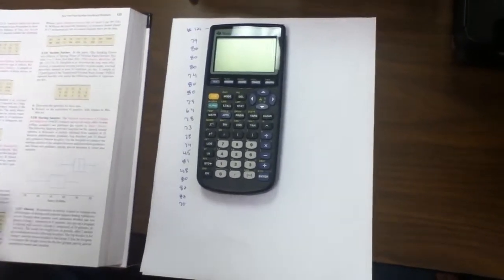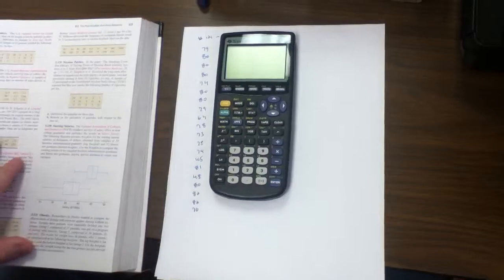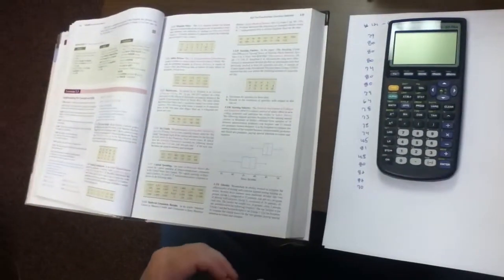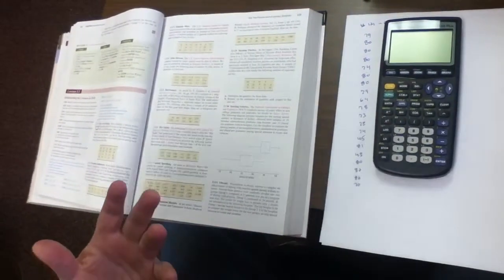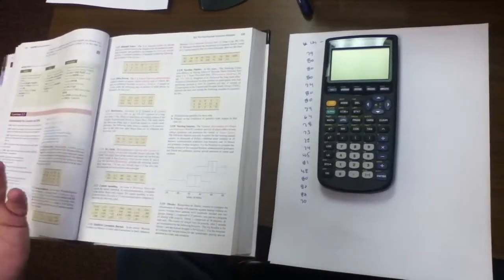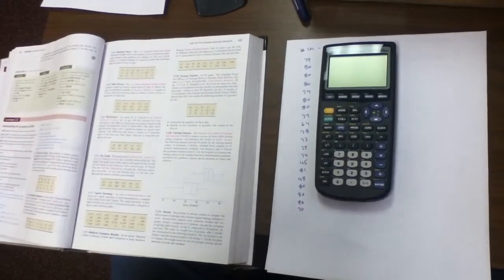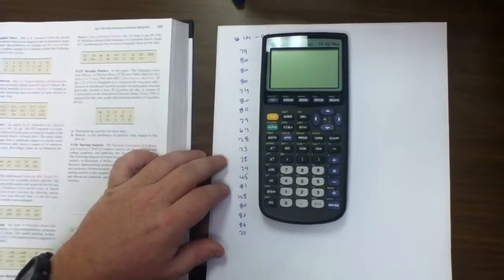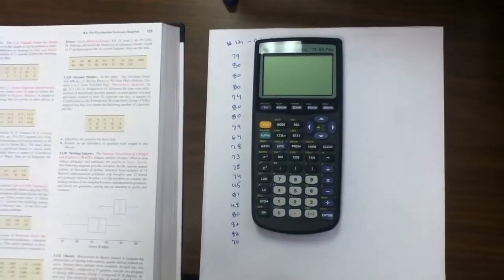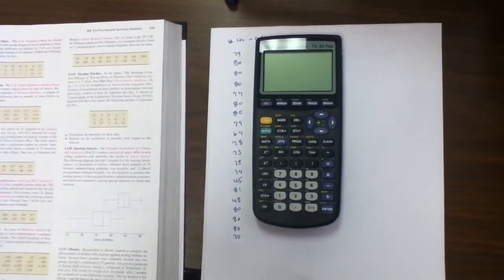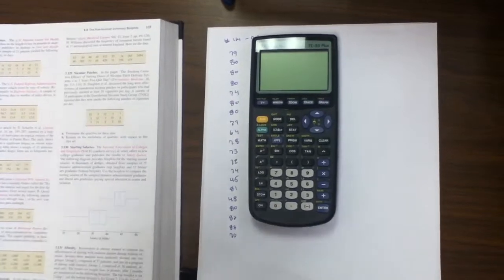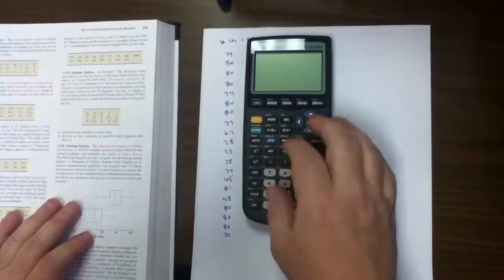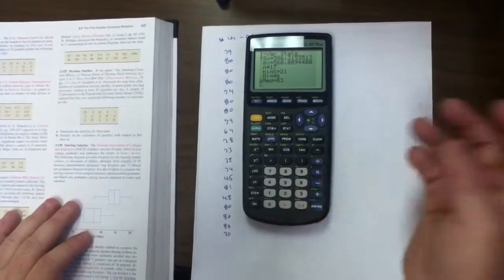To start with, we're going to do problem number 121 on page 124. We're going to do a five number summary on this data set, which will be this tutorial, and then the next tutorial we'll do the box plot with the calculator. First thing I need to do is enter the data. As you can see here, the data is on the paper, which is the same as the data on page 124 for problem number 121.